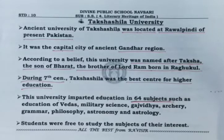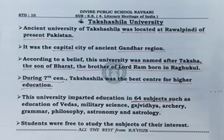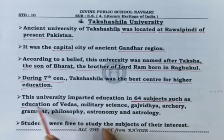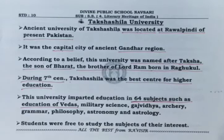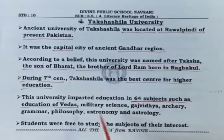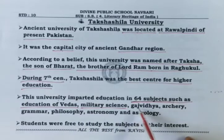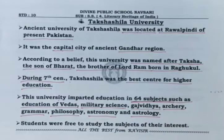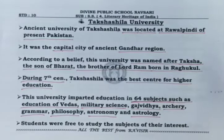64 subjects — even today, not so many subjects are taught in a single university. In that era, Takshashila had 64 subjects. For example, education of the Vedas, military science, Gajvidya, archery, grammar, philosophy, astronomy, astrology, and many more. The total was 64. These are just a few examples, children.